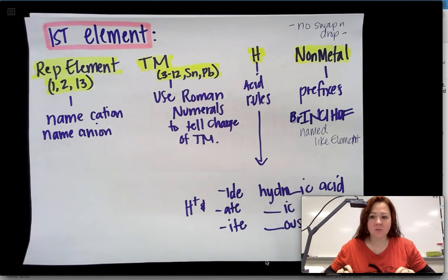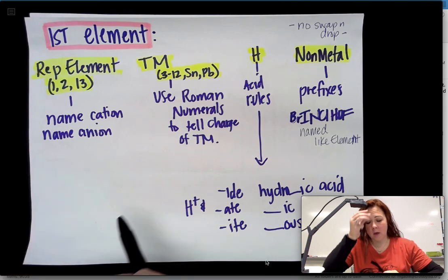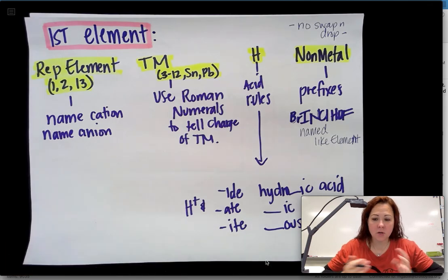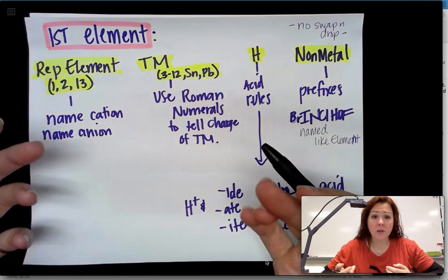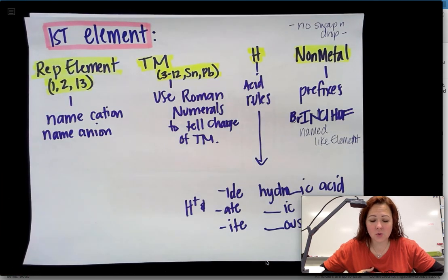After this we're going to do something called Vesper and then the unit is done. Nomenclature is something that you need to know all year long, and when you see it you're normally going to have all of the elements or all the different types of nomenclature all just put together and mixed up.